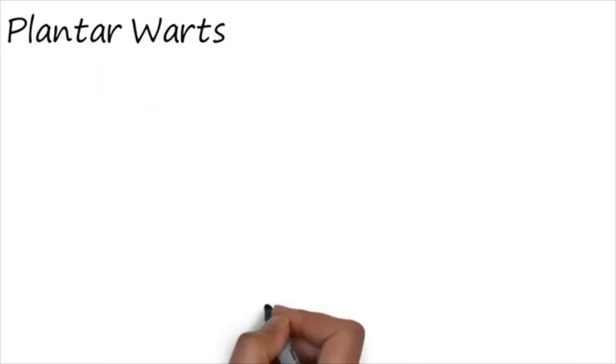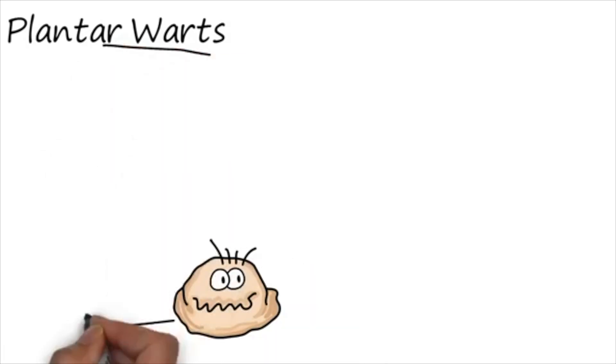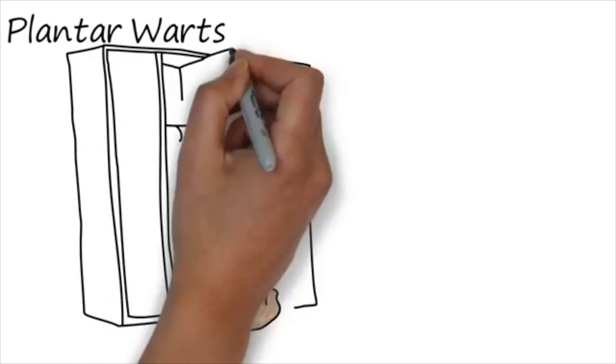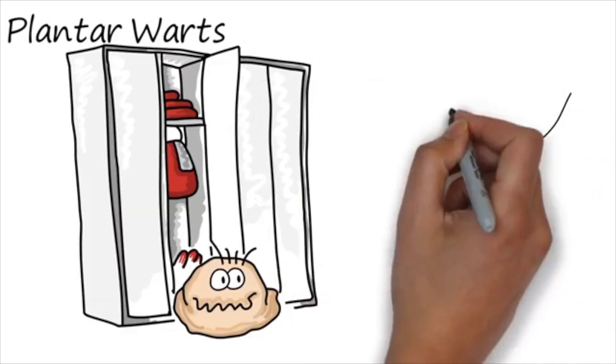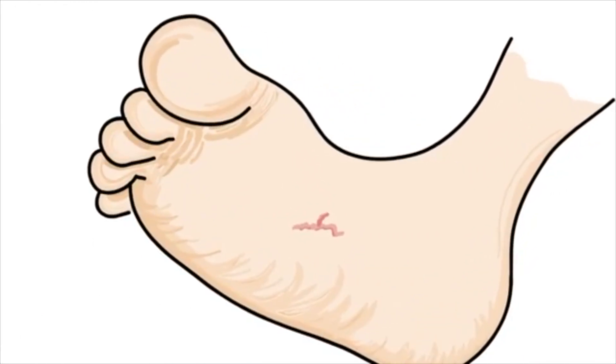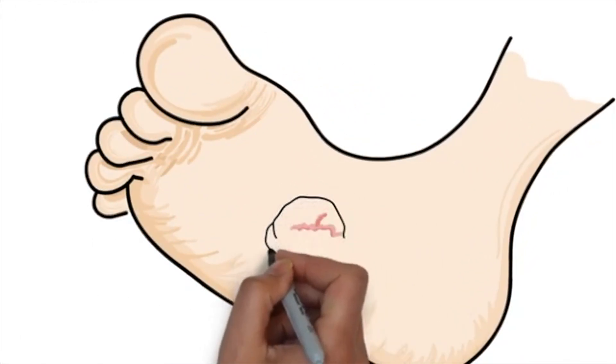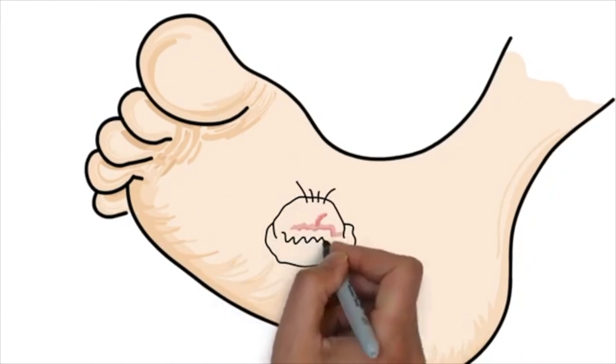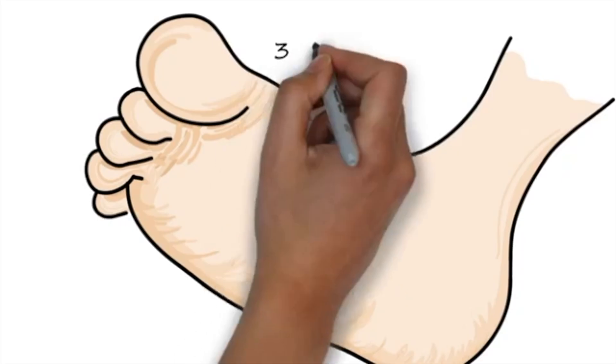Plantar warts: a virus called HPV, for short, lives in warm, damp places such as locker room floors and the changing rooms of swimming pools. The virus finds cracks in the dry skin of your feet or looks to enter the skin through cuts or scrapes.